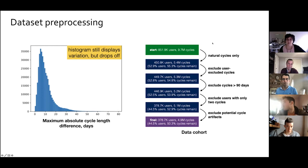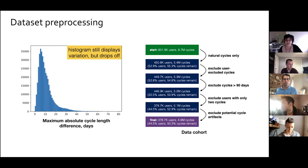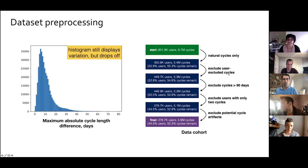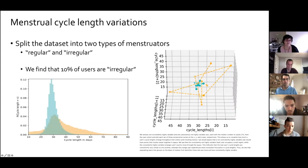The 380,000-user cohort was constructed by selecting people with natural cycles only — no contraceptive use — aged 21 to 35, considered stable reproductive years. Cycles that don't make physiological sense and user-excluded cycles (e.g., due to pregnancy) were also removed.